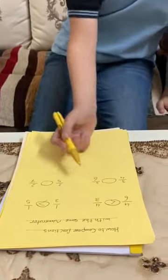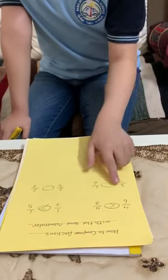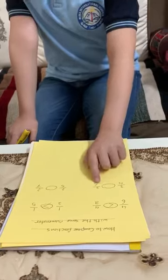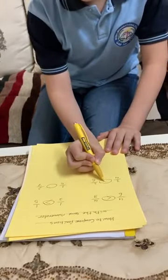3 over 4 and 3 over 6. 3 and 3 is equal numerator. And 4 is smaller than 6, so 3 over 6 will be the bigger.